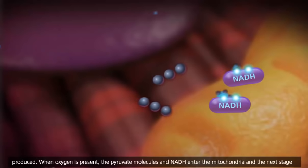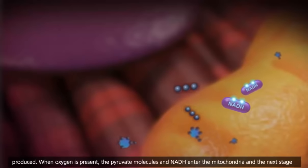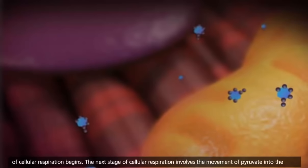When oxygen is present, the pyruvate molecules and NADH enter the mitochondria, and the next stage of cellular respiration begins.